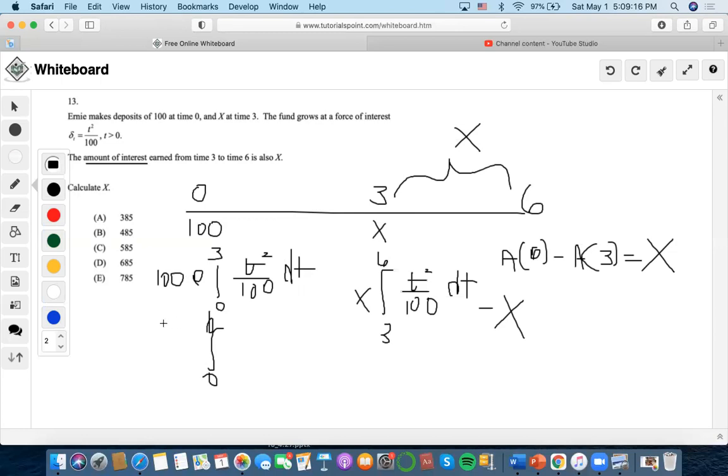So once we solve these integrals and subtract both of these values in the accumulation factors, we are able to add both of these values and set it equal to x. So the total amount of interest occurring here set it equal to x so we can find x. Now let's solve this.